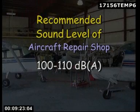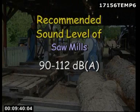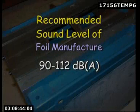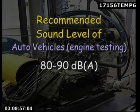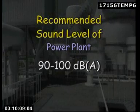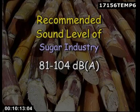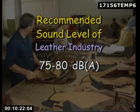Further industrial sound levels (A-weighted): Aircraft repair shop 100–110 dB; Glass blowing shop 70–108 dB; Ammunition factory 85–101 dB; Saw mills 90–112 dB; Foil manufacture 90–112 dB; Vanaspati filling section 76–87 dB; Auto vehicles engine testing 80–90 dB; Synthetic power industry 90–116 dB; Power plant 90–100 dB; Sugar industry 81–104 dB; Plastic industry 87–94 dB; Leather industry 75–80 dB.